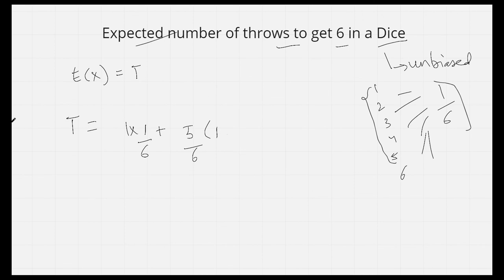So we have already taken 1 throw, and now we are again at the same step when we need to throw dice in order to get 6. So what is the expected number of throws for that? We have already assumed it to be T.